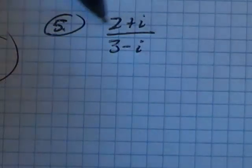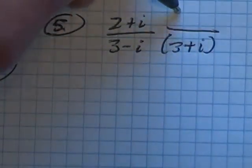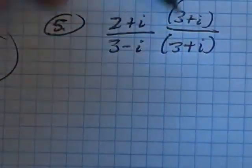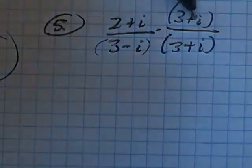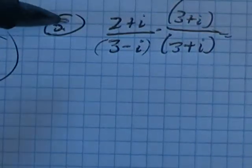So just like on problem four we just did, I'm going to multiply by... I'm sorry, not its reciprocal, its conjugate to get rid of it. Notice I'm just multiplying by one. Now I'm going to multiply these out.